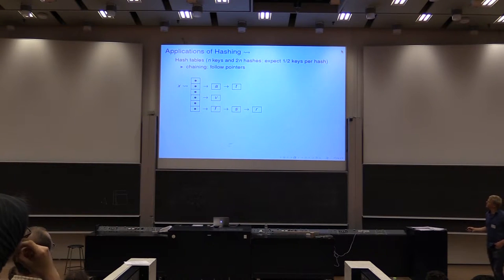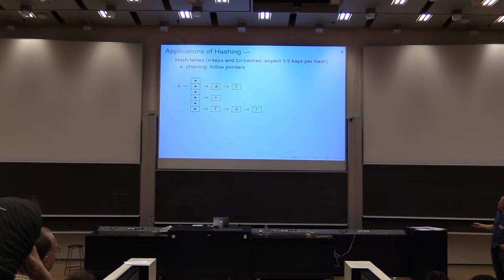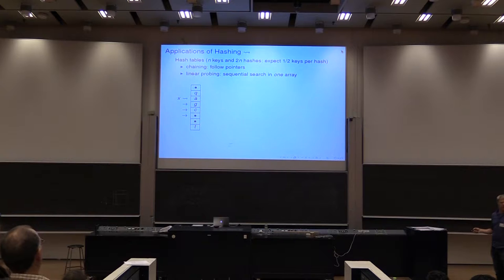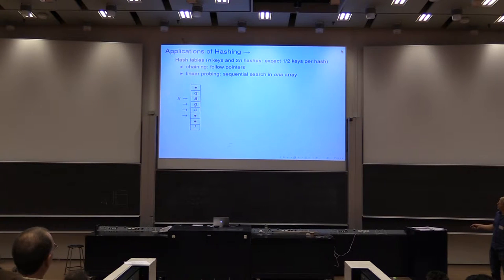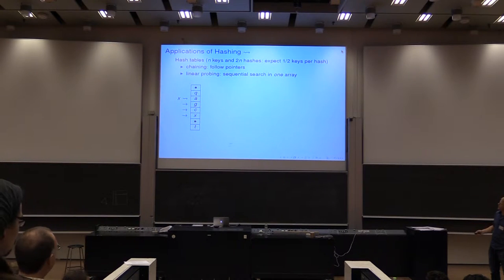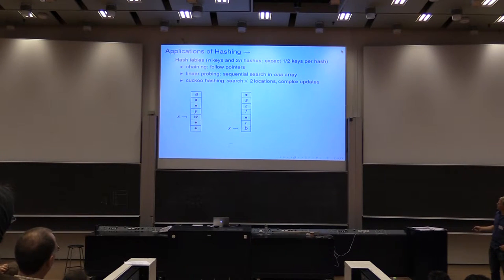The applications of hashing we've talked about include chaining, where we hash X to find what list it belongs in and place it there. We have linear probing, which last time needed seven — well, could be implemented with five independent hash functions. Here we hash somewhere in an array and if the element is not there, we look at the next until we find the element or an empty position. Other applications are cuckoo hashing where we look at two locations — if you want to place X and it's not there, everything has to be moved around.